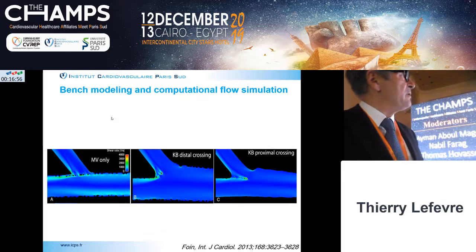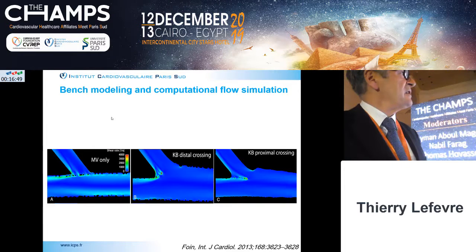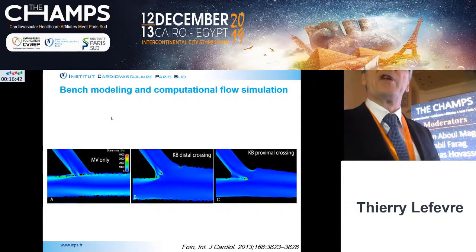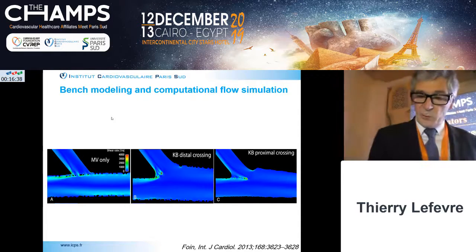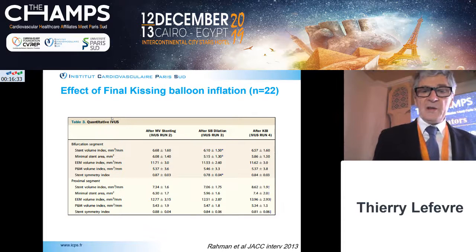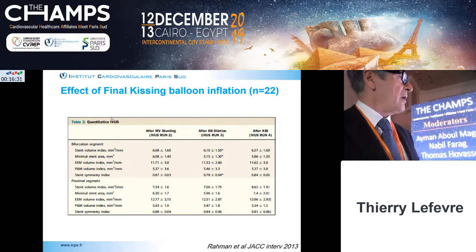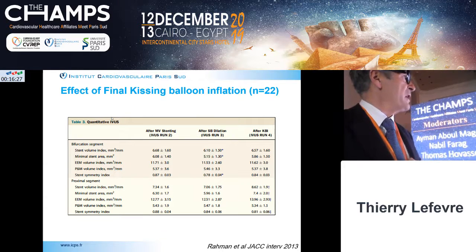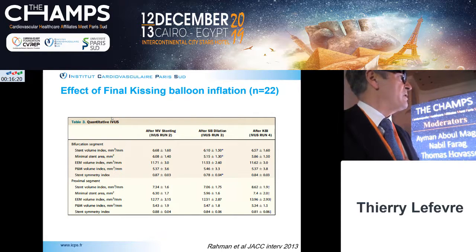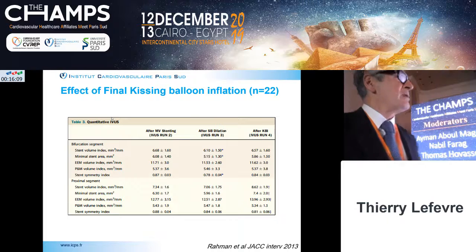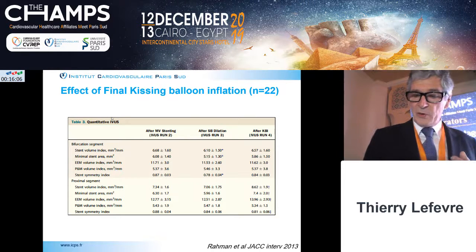Bench data show the difference between main vessel only, kissing through the distal strut, or kissing through the proximal strut: with the proximal strut you create a neo-carina like the TAP technique, so it is very important to go through a distal strut. Data from Raman show improvement in every parameter when kissing balloon inflation is performed, including minimal stent area, confirming that kissing corrects the problem of side branch strut opening.